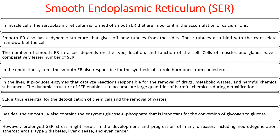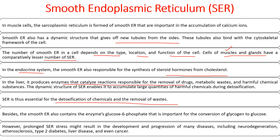The sarcoplasmic reticulum is formed from SER. Smooth ER has a dynamic structure that gives off new tubules. The number of SER in a cell depends on its type, location, and function. In the endocrine system, SER is responsible for the synthesis of steroid hormones from cholesterol. In the liver, it produces enzymes that catalyze reactions responsible for the removal of drugs — biotransformation or biodegradation. SER is therefore essential for detoxification and removal of wastes. It also contains glucose-6-phosphatase, important for glucose conversion.